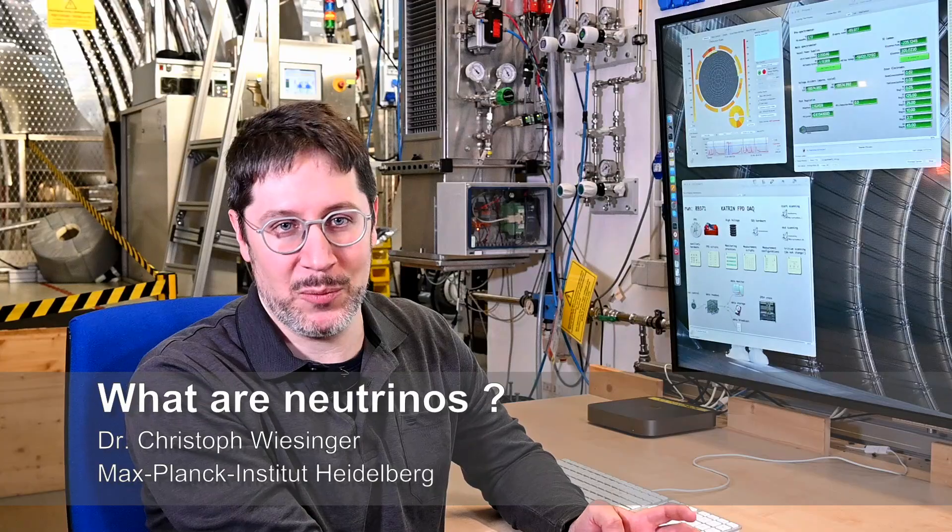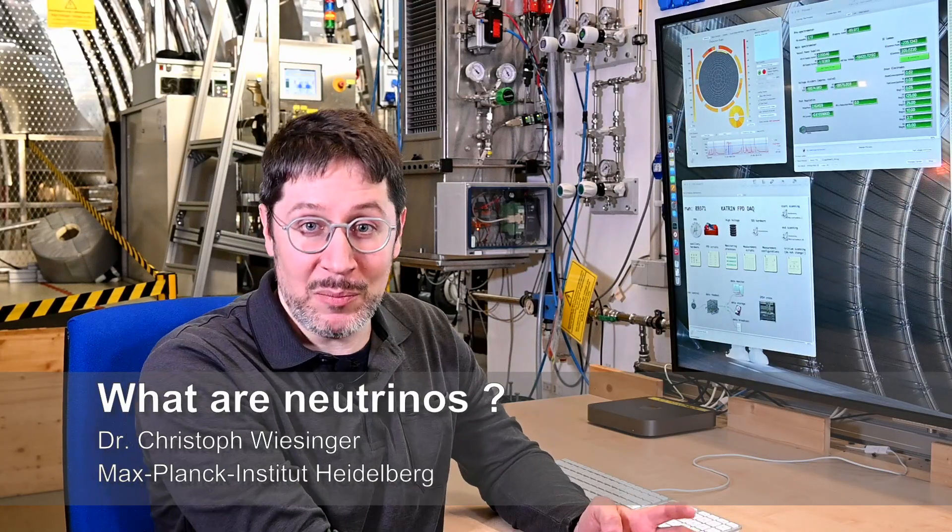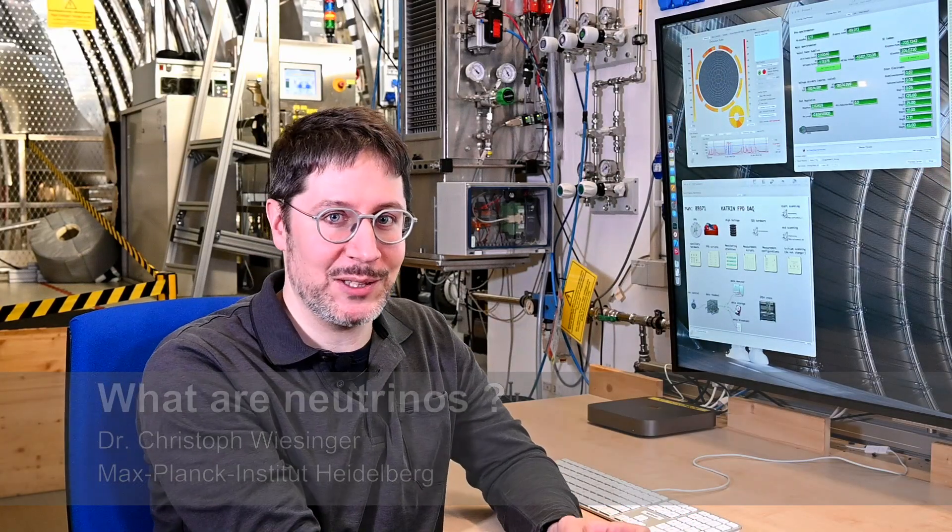Neutrinos are extremely special. They are the lightest particles with mass, they have no electric charge, and only interact weakly with matter. They come in three flavors which we call electron, muon, and tau neutrino, and the observed oscillations between these flavors is what tells us that neutrinos have mass.